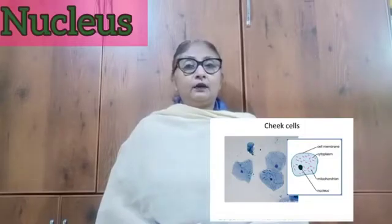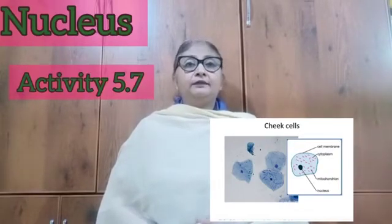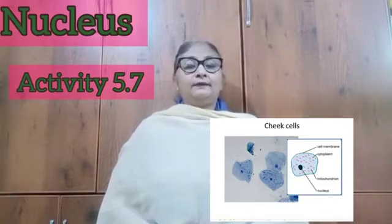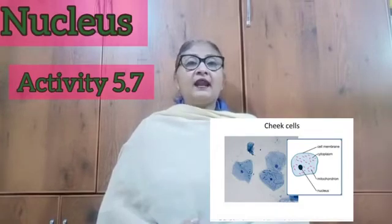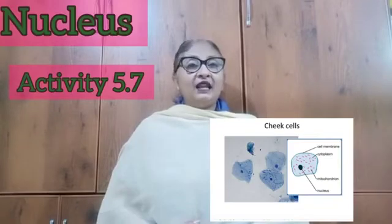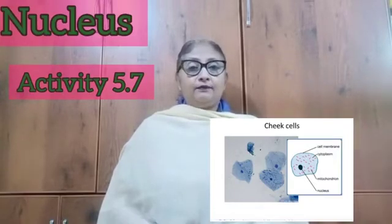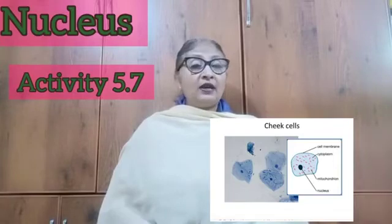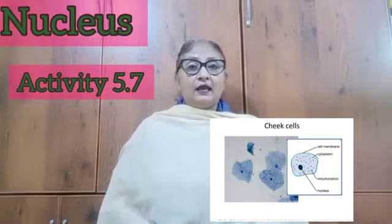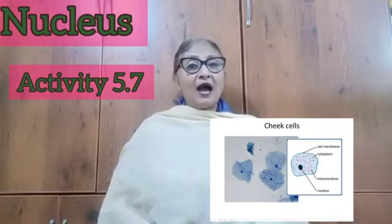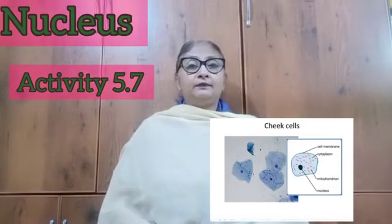Let us refer to activity 5.7. We need to rinse our mouth properly, then pull out the cheek and scrape out cheek cells using a toothpick. Place these scraped cells on a glass slide, put a few drops of methylene blue and glycerin, put a cover slip, and view it through the microscope. We can see cells — these cells do not have a definite shape — but we can see a darkly stained round structure in the center of the cell. That is the nucleus, while the lightly stained part is the cytoplasm.